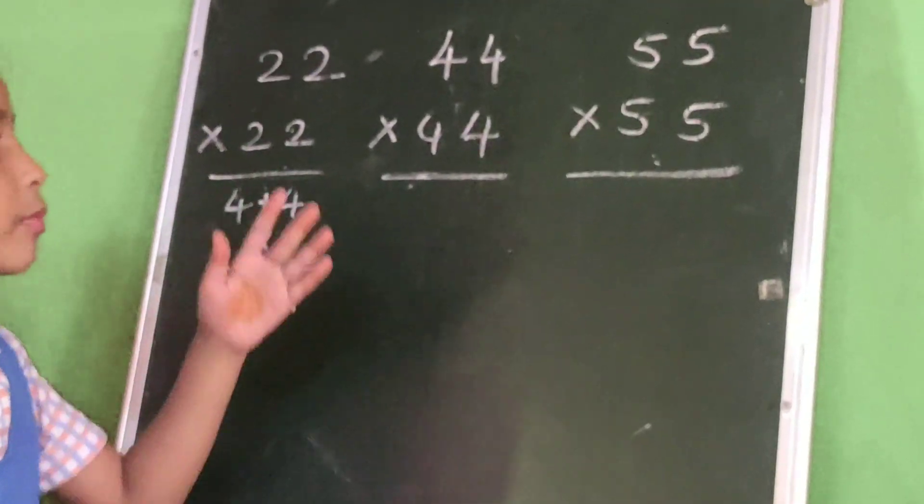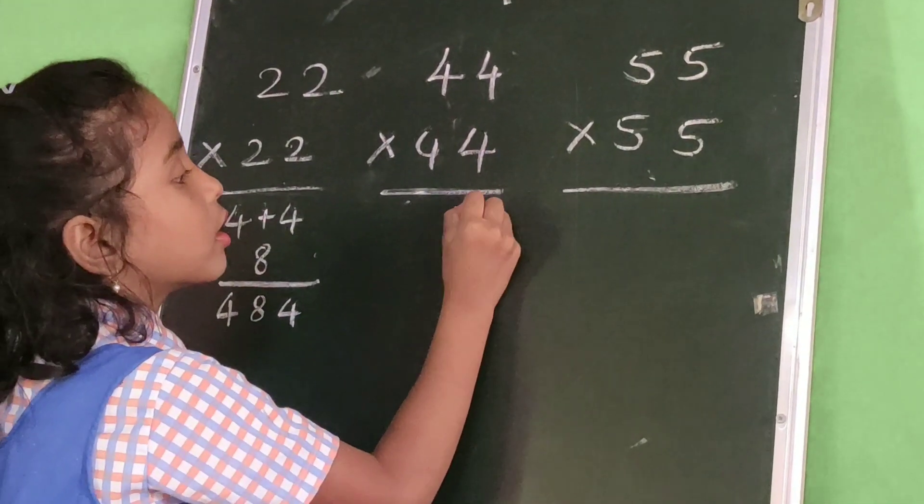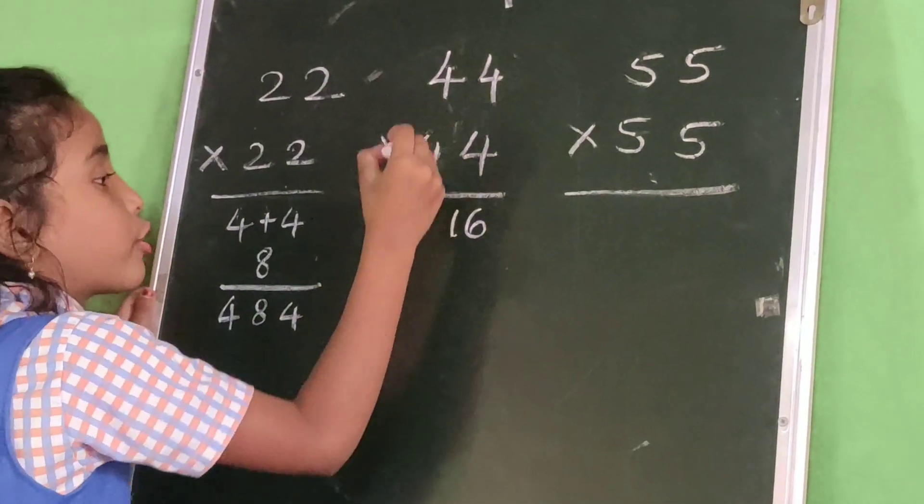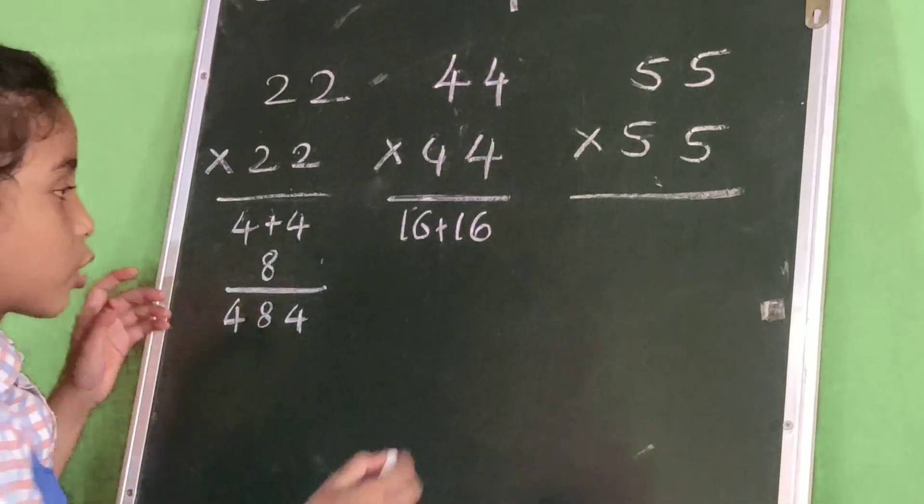Next problem: 44 times 44. 4 times 4 is 16, 4 times 4 is 16. 16 plus 16 equals 32.